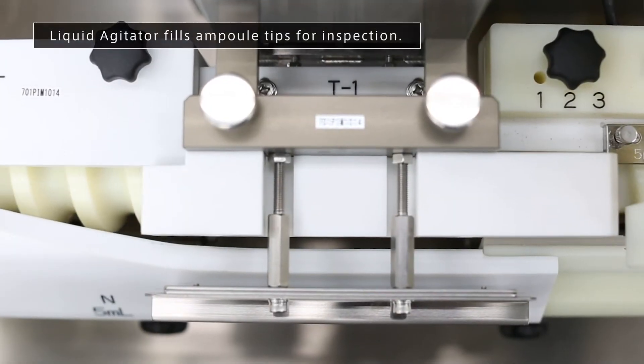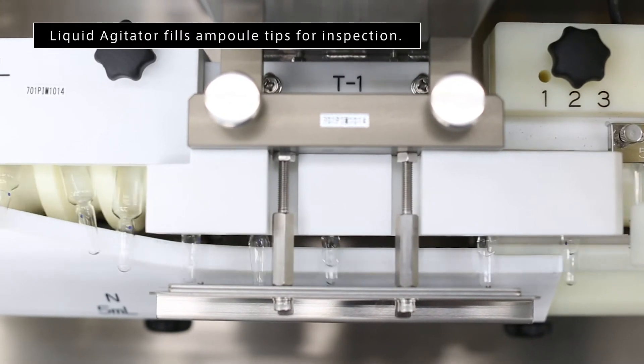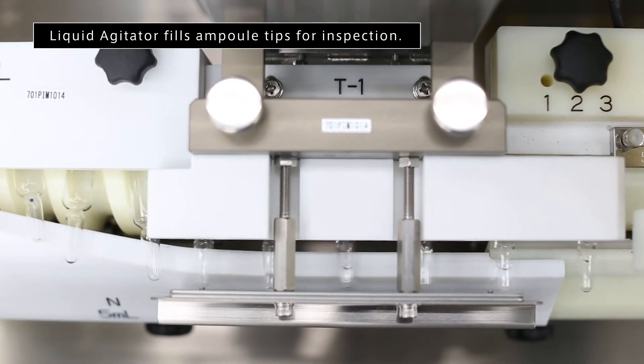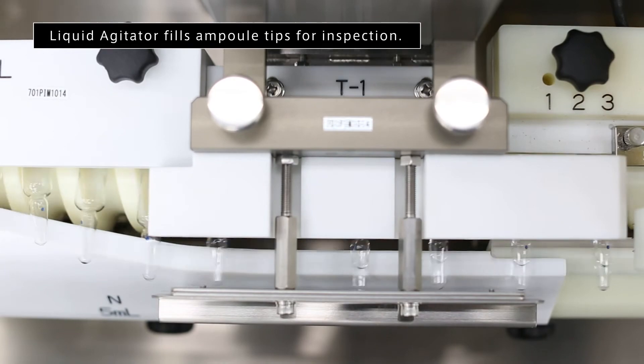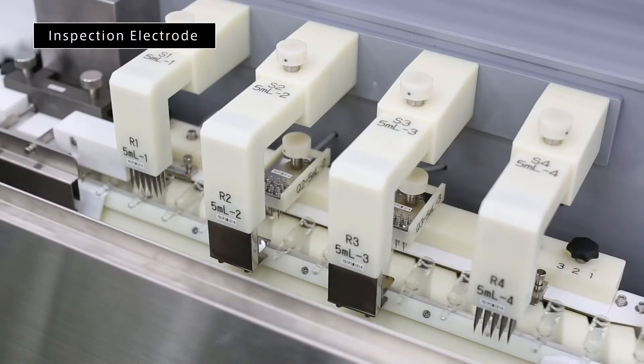The machine ensures there is sufficient liquid in the tip for inspection by gently agitating the product. Multiple inspection stations are used to cover the full surface area of the container.